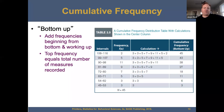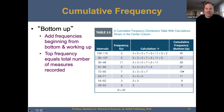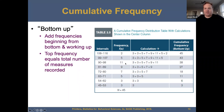Bottom up — we add frequencies beginning from the bottom and working up. The top frequency equals the total number of measures recorded. So this is your frequency distribution: 3, 6, 11, 18, 27, 38, 43, 45 — we're adding each frequency to the other frequency. I may show you some stuff on percentiles conceptually so that makes more sense.